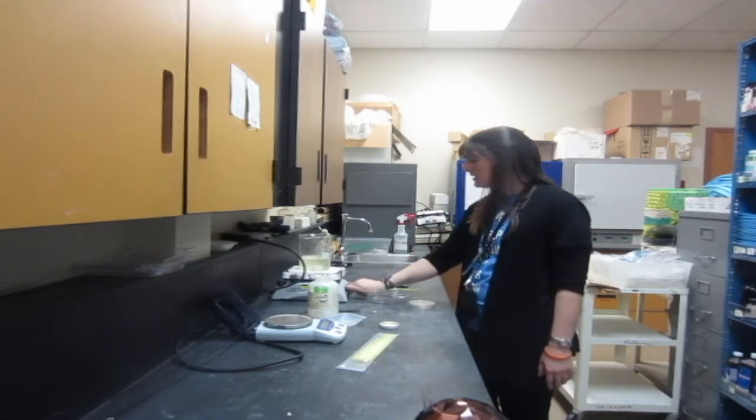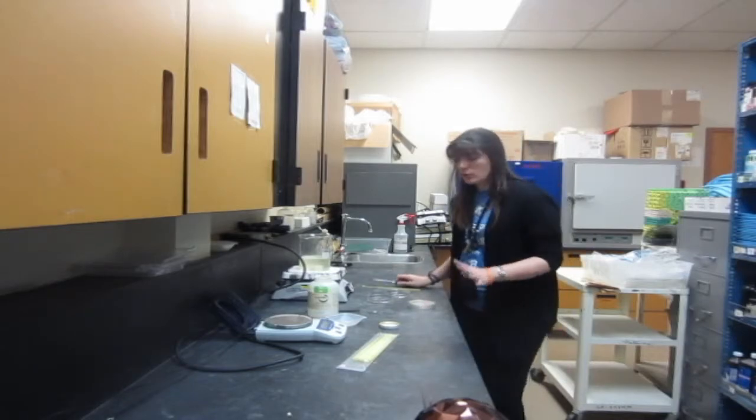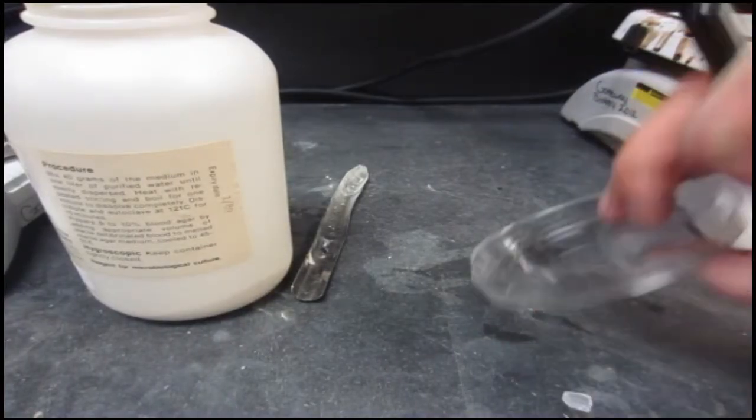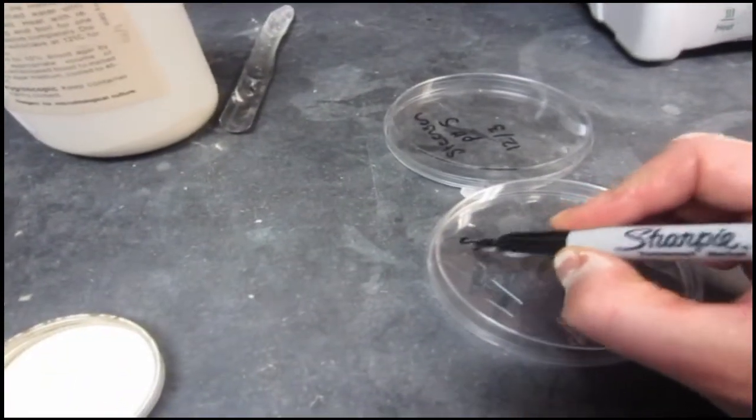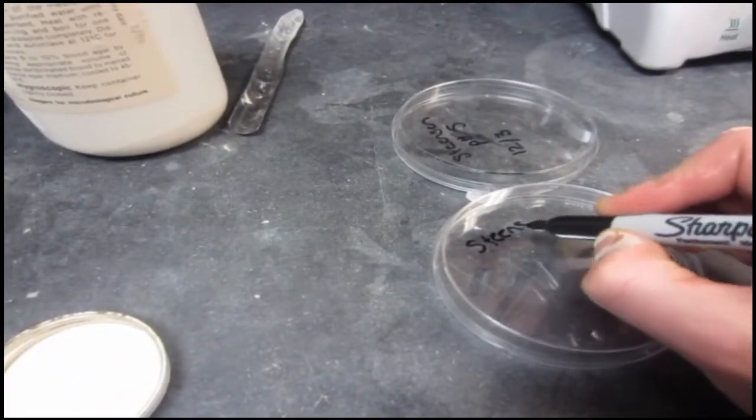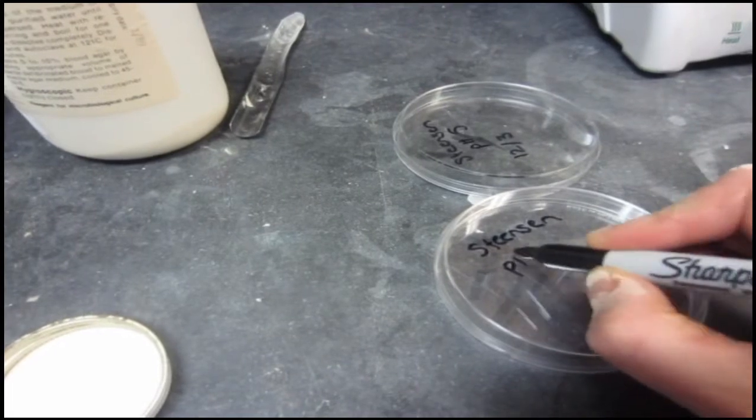Once you have your agar all ready, then you are going to be ready to create your petri dishes. The first thing you want to do before anything else is you want to label these things. Always label the bottom, not the lid. It's just good practice to make sure that you don't lose any of these parts.